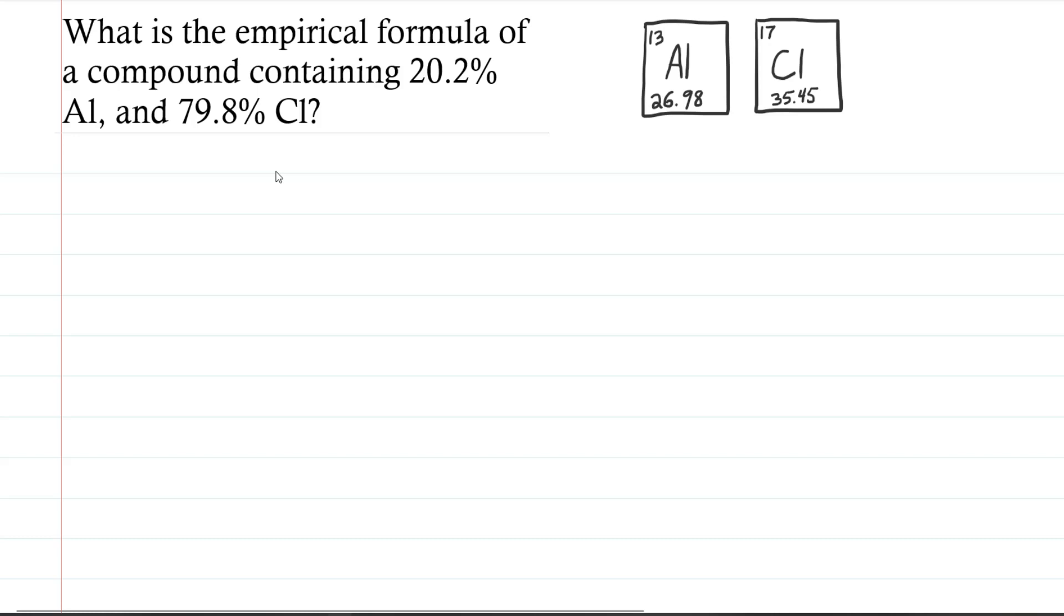All right, so the problem is, what is the empirical formula of a compound containing 20.2% aluminum and 79.8% chlorine?